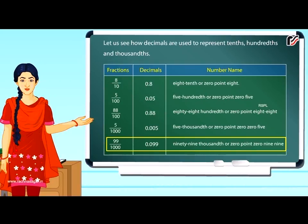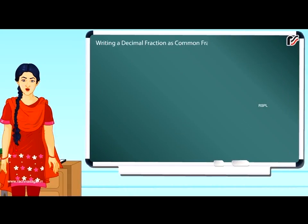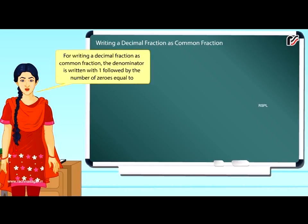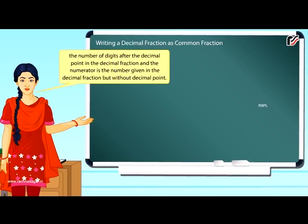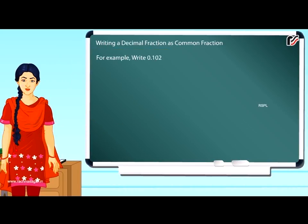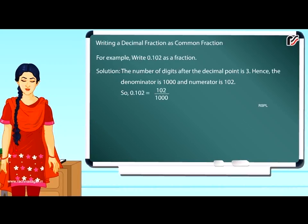Writing a decimal fraction as a common fraction. The denominator is written with 1 followed by zeros equal to the number of digits after the decimal point, and the numerator is the number without the decimal point. For example, write 0.102 as a fraction. The number of digits after the decimal point is 3, so the denominator is 1000 and the numerator is 102. Therefore, 0.102 = 102/1000.